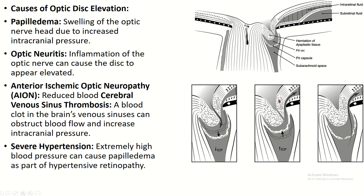Causes of optic disc elevation include papilledema — swelling of the optic nerve head due to increased intracranial pressure. The optic nerve is surrounded by meninges and its subarachnoid space contains CSF; if CSF pressure increases, it causes elevation of the optic disc. Other causes include optic neuritis, where inflammation causes swelling, as well as anterior ischemic optic neuropathy, venous sinus thrombosis, and severe hypertension.